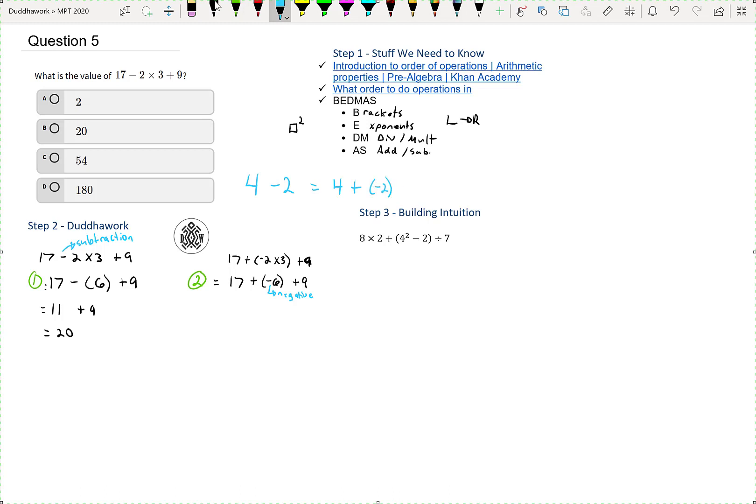This is the same thing. This is 4 minus 2, which is equal to 2. They say the same thing. So now if we add a negative number, we get 11. We're going left to right and then plus 9, which is 20. And so that would be question B. Now for answer number B.